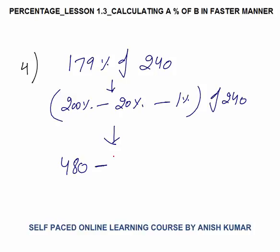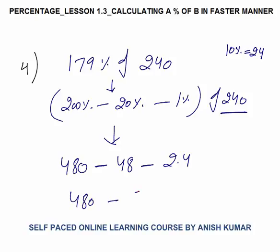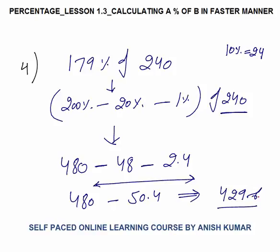Minus 20 percent: 10 percent of 240 is 24, so 20 percent would be double, that is 48. Minus 1 percent: 1 percent of 240 is 2.4. Both are negative, so 48 plus 2.4 would be 50.4, meaning minus 50.4. Now to subtract verbally: subtract 50.4 from 480 — 480 minus 50 would be 430, then subtract 0.4, giving 429.6. This you must be able to solve verbally. The answer would be 429.6.